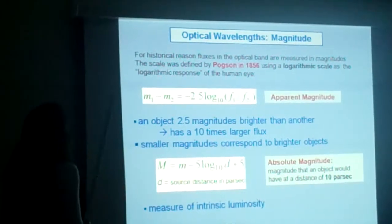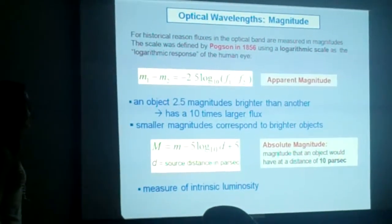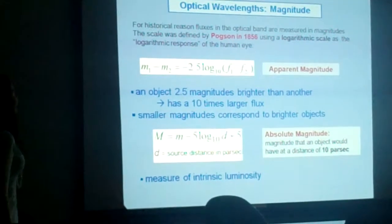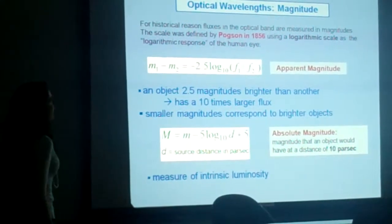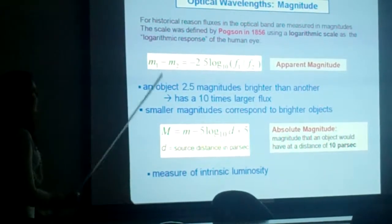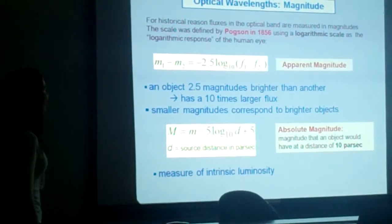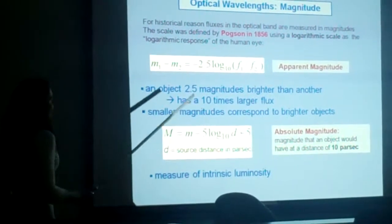For historical reasons, the flux in the optical band is measured as magnitude. The scale was defined using the logarithmic scale that is similar to the logarithmic response of our eyes to the light.